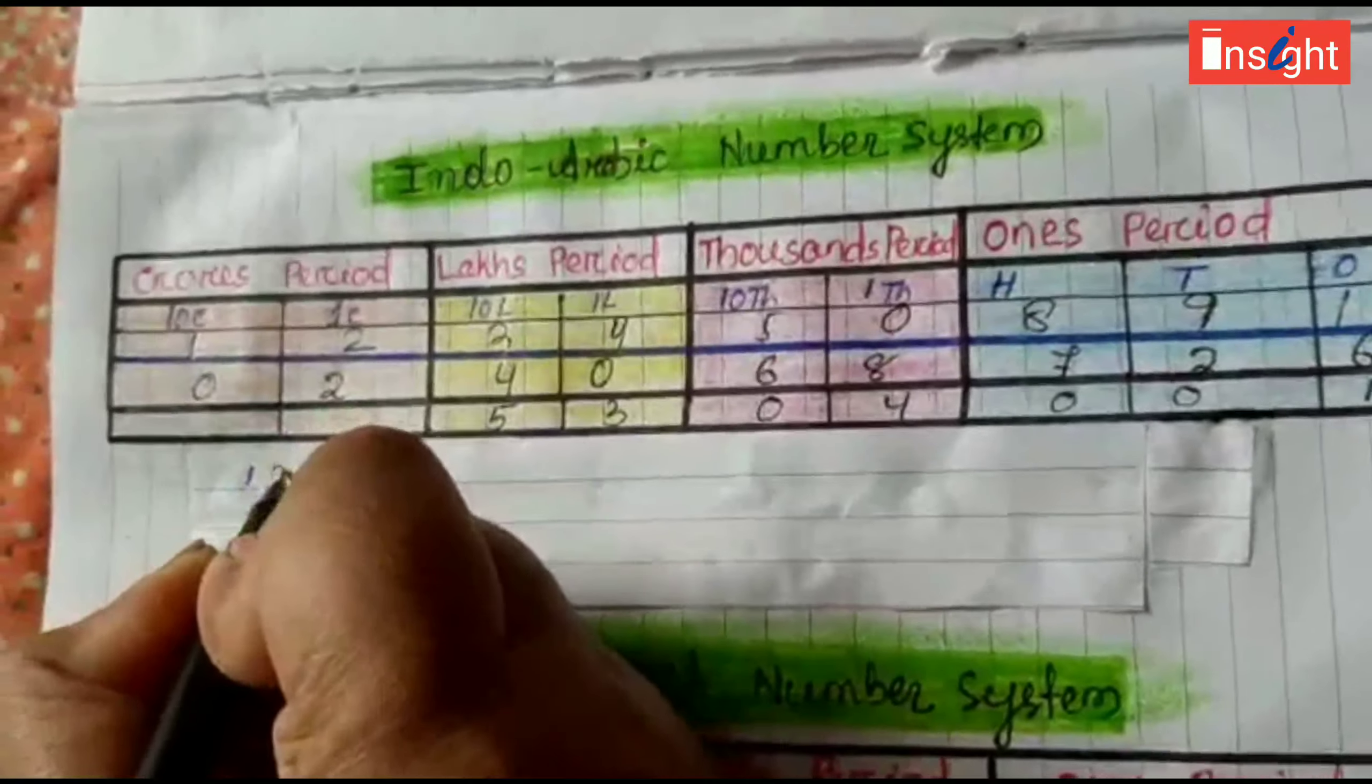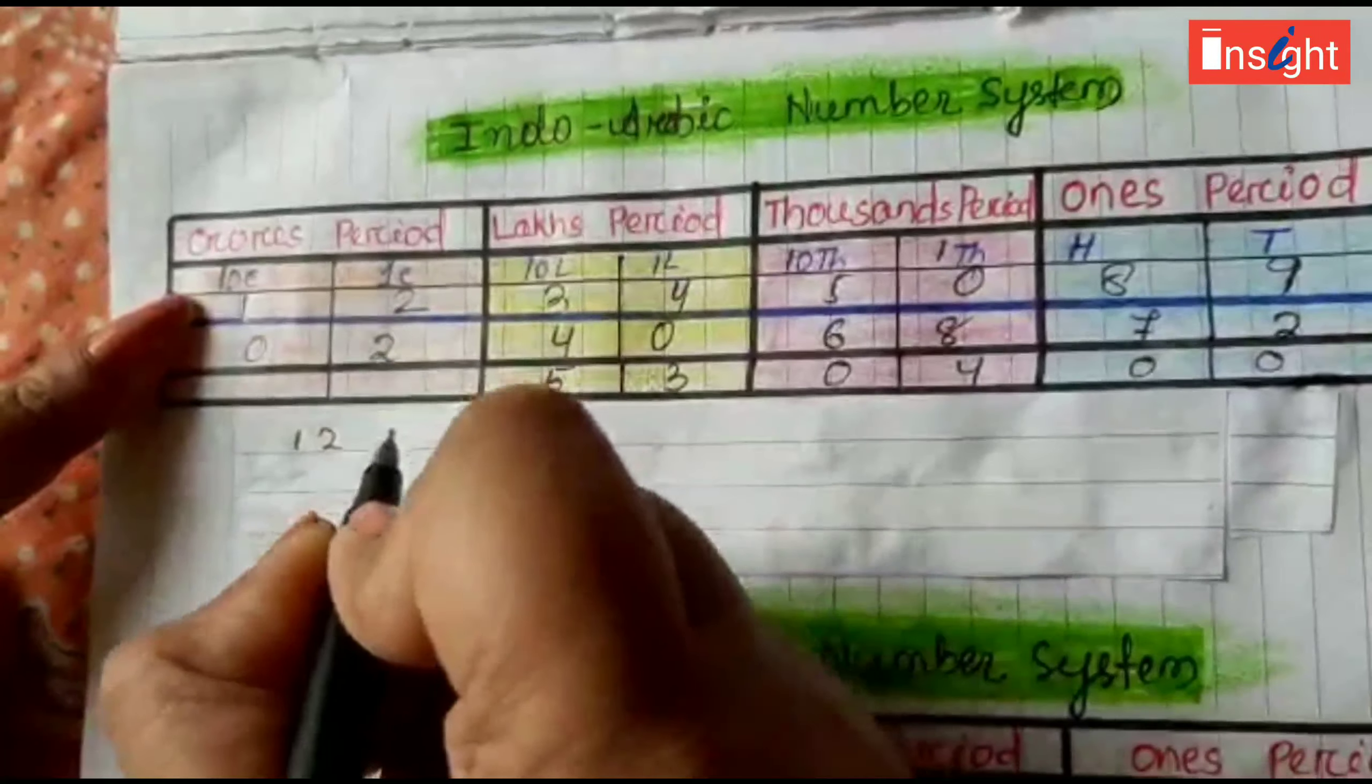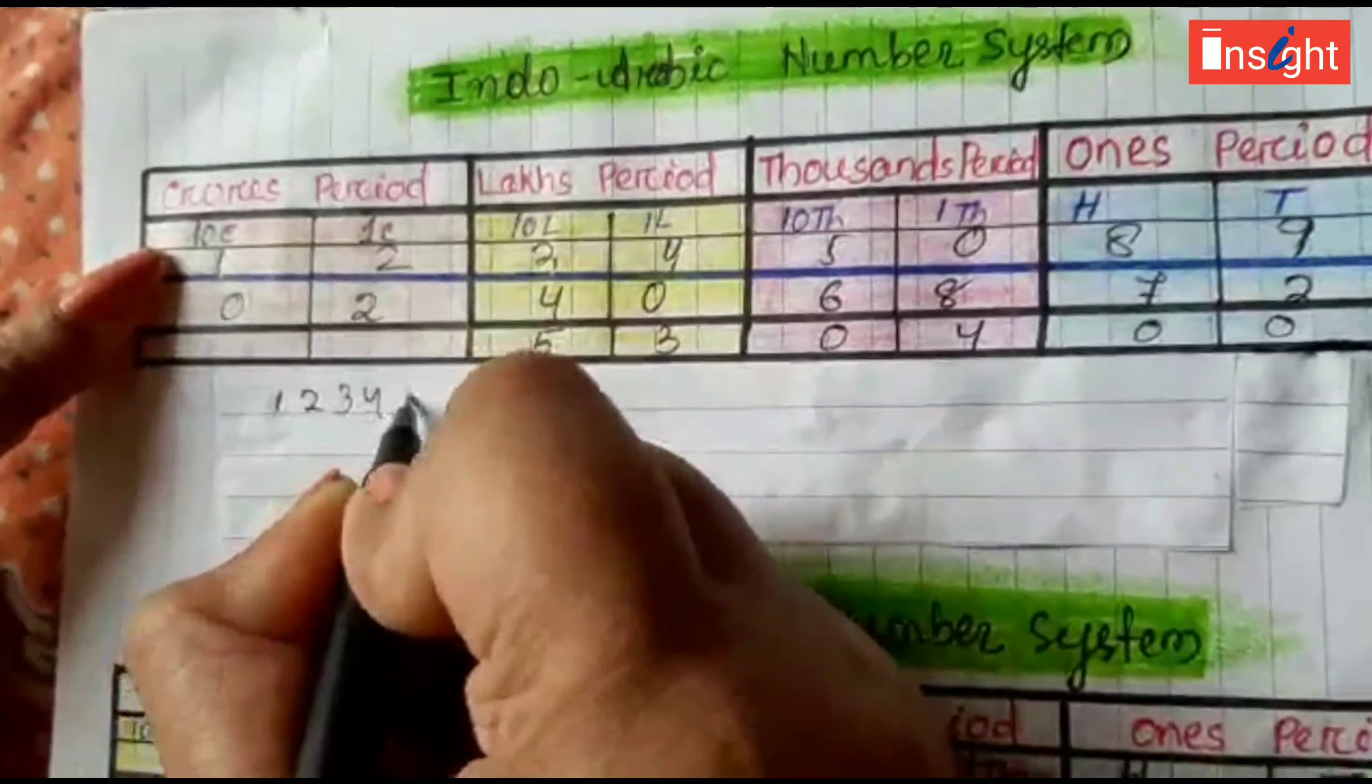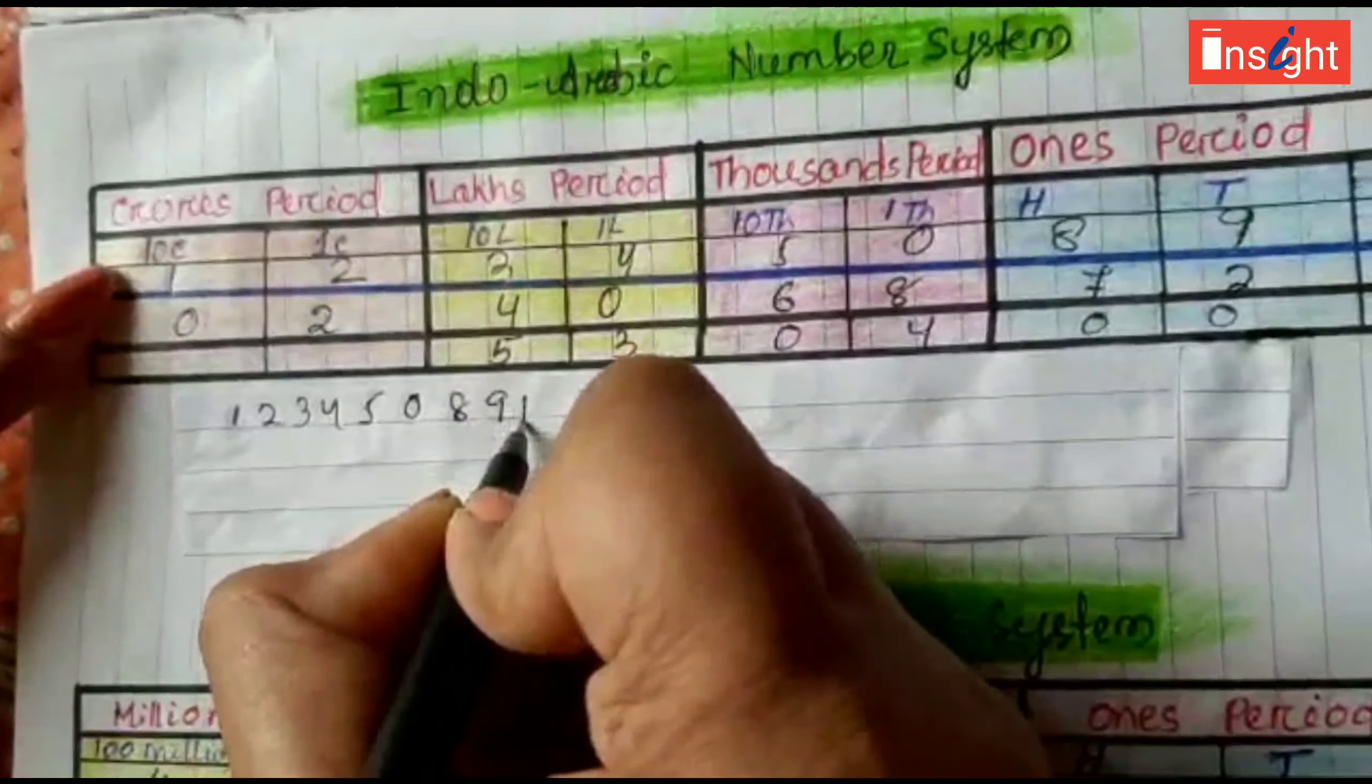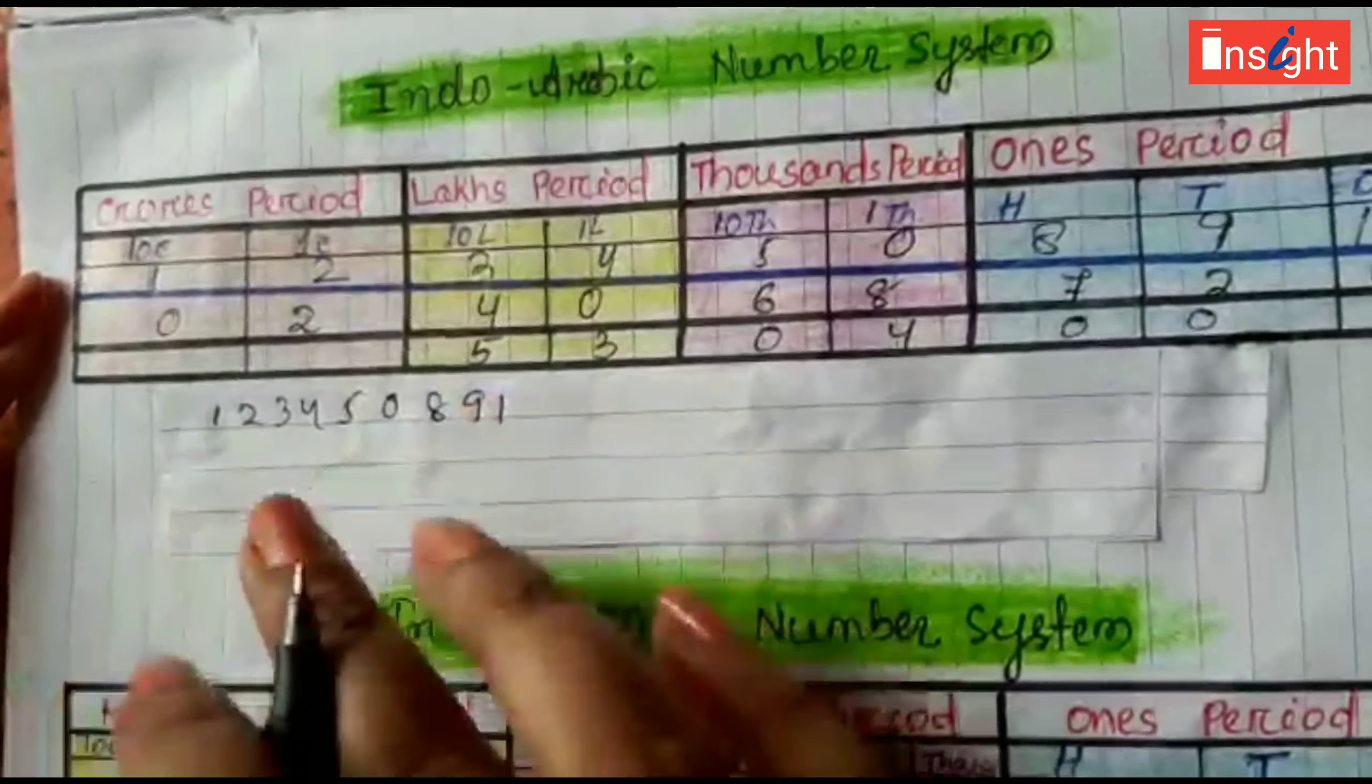So, I am writing the numbers of example one: one, two, three, four, five, zero, eight, nine, one. Without giving any comma, it is meaningless.